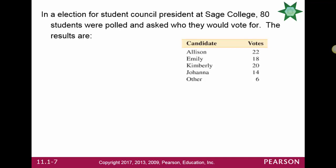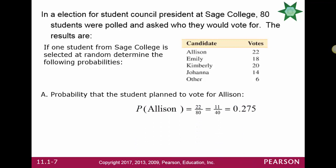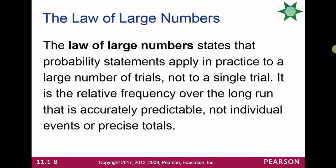In an election for student council president at Sage College, 80 students were polled and asked who they would vote for. If one student from Sage is selected at random, the probability the student planned to vote for Allison is 22 out of 80, or 11 out of 40, or 0.275. The probability that the student planned to vote for Kimberly is 20 out of 80, or 1 quarter, or 0.25.